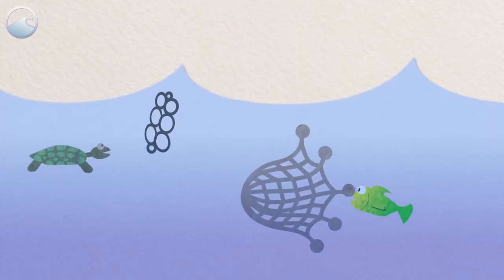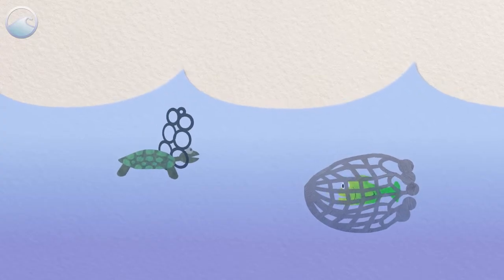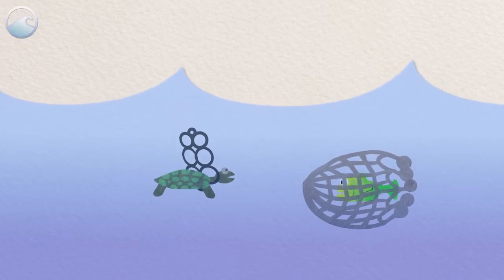Marine species often get tangled in debris, from fishing nets to six-pack rings. If they get caught, they could get injured, or even die.